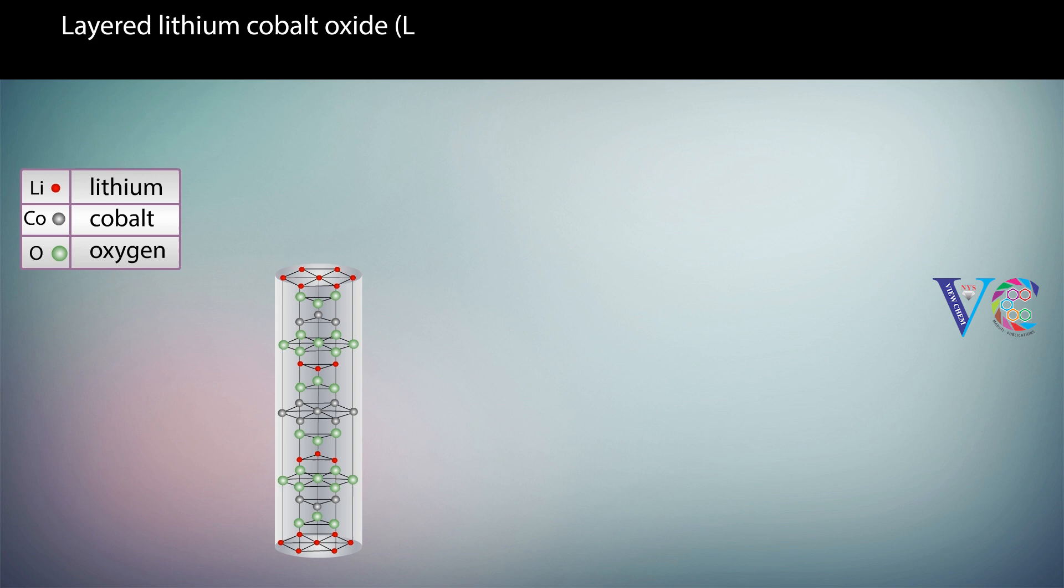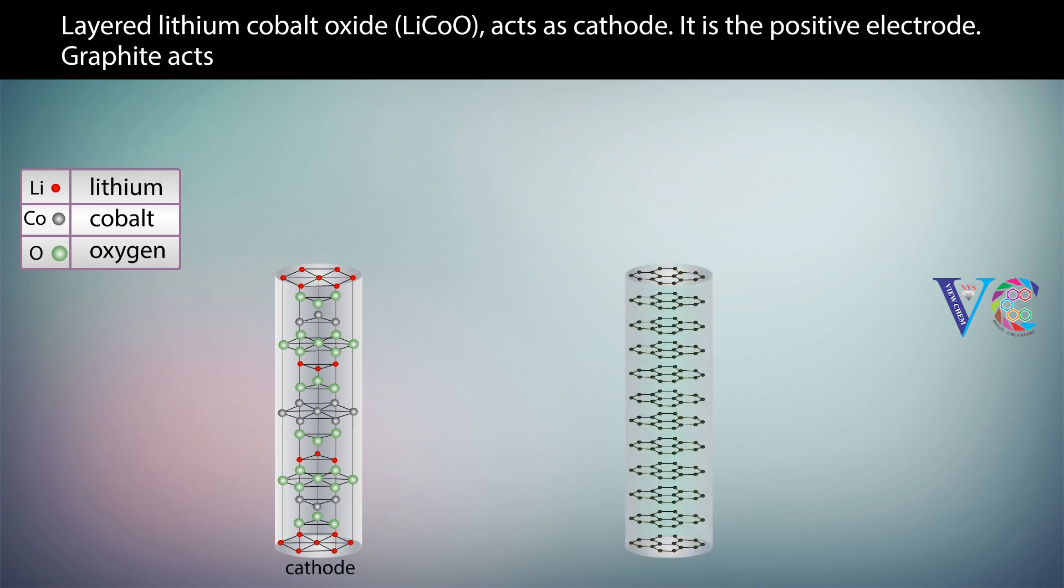Layered lithium cobalt oxide acts as cathode. It is the positive electrode. Graphite acts as anode. It is the negative electrode.